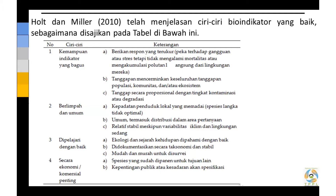Kemudian dipelajari dengan baik, ekologi dan sejarah kehidupannya dipahami dengan baik sehingga latar belakangnya dipahami. Kemudian, didokumentasikan secara taksonomi dan stabil, didokumentasikan berdasarkan kerangka ilmiah atau nama latinnya, ada dokumentasi yang jelas. Kemudian, mudah dan murah untuk disurvei. Yang terakhir adalah secara ekonomi atau komersial penting, yaitu spesies yang sudah dipanen untuk tujuan lain, kemudian kepentingan publik atau kesadaran akan spesifikasi, biasanya untuk riset-riset.